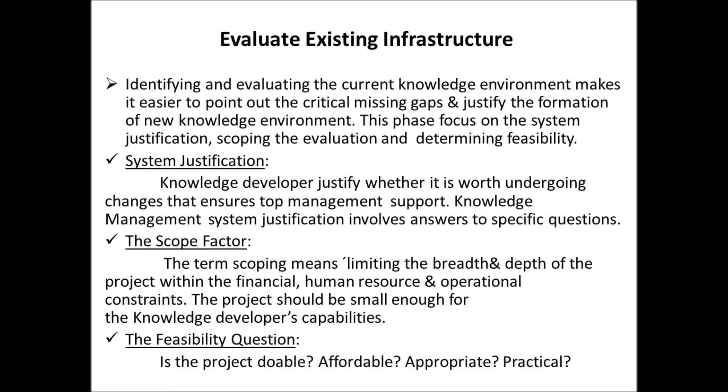System justification: the knowledge developer justifies whether it is worth undergoing changes that ensures top management support. Knowledge management system justification involves answers to specific questions. The scope factor: scoping means limiting the breadth and depth of the project within the financial, human resource, and operational constraints. The project should be small enough for the knowledge developer's capabilities. The feasibility question: Is the project doable, affordable, appropriate, and practical?